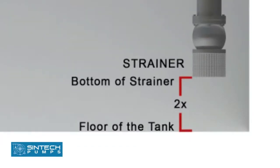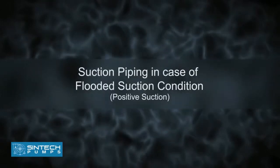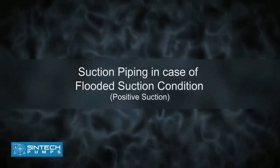The distance between the bottom of strainer and the floor of the tank should be considered as 2 times the pipe diameter. Suction piping in case of flooded suction condition, positive suction.